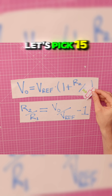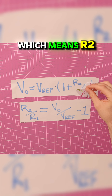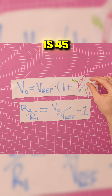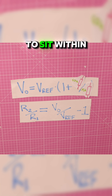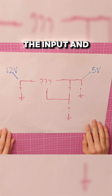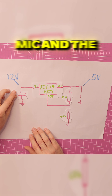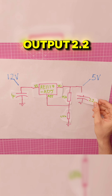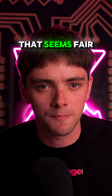Let's pick 15 kilohms for R1, which means R2 is 45 — so let's choose 47 to sit within E12 values. We need some capacitance on the input and output, so let's give the input 1 µF and the output 2.2 µF. That seems fair.